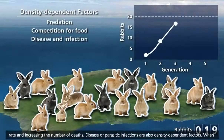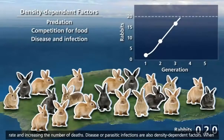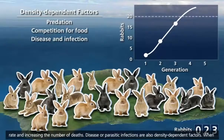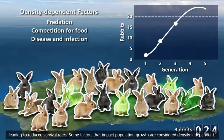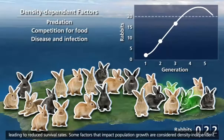Disease or parasitic infections are also density-dependent factors. When the population is larger, there is crowding, and disease agents can pass more easily from one rabbit to the next, leading to reduced survival rates.